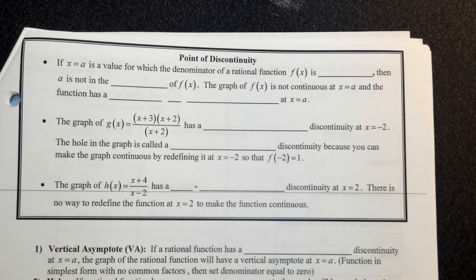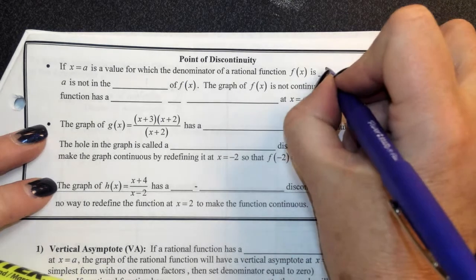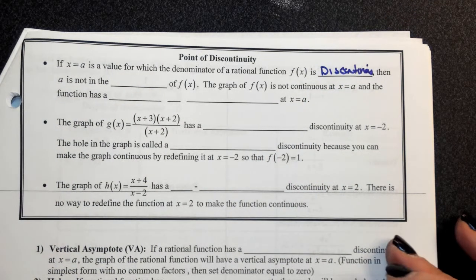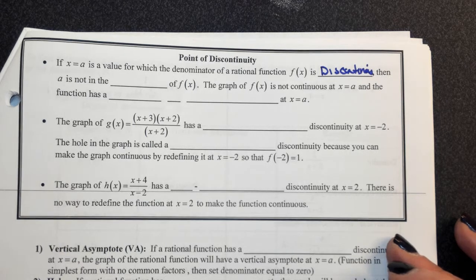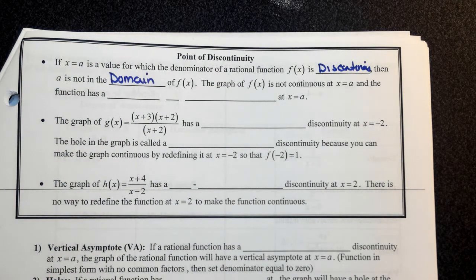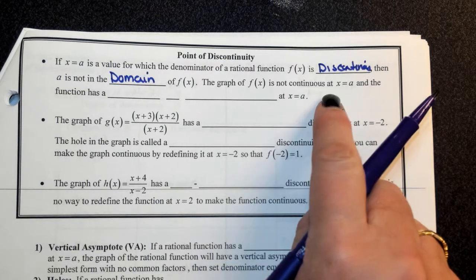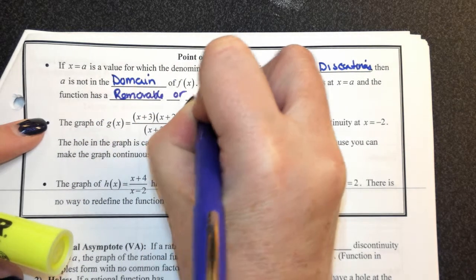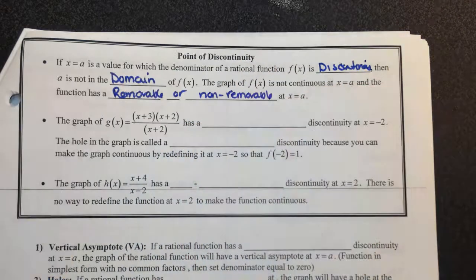Discontinuity — you talked a little about this last year, and we may go a bit further. If you have a value in the denominator that gives you zero, f of x is discontinuous. Whatever values you find when you set the denominator equal to zero are not in the domain. We call this function discontinuous — not continuous at x equals a, and the function has removable or non-removable discontinuity at x equals a.